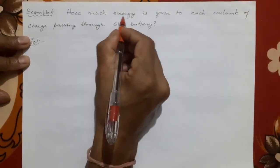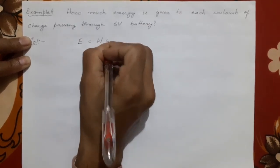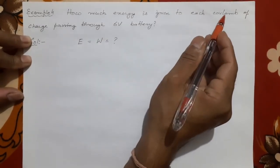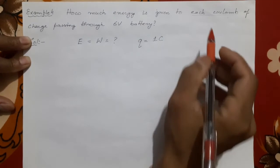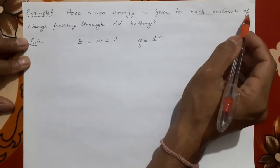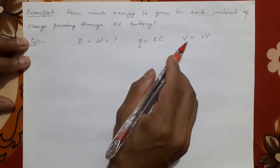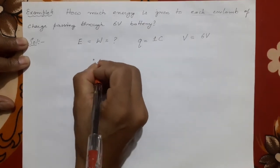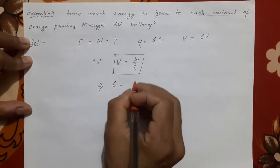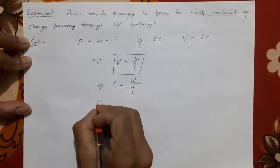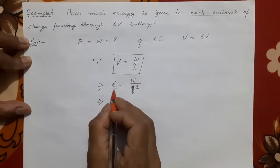Question 4 asks: how much energy is given to each coulomb of charge passing through a six volt battery? Energy is the same as work done, so you have to find W. 'Each coulomb' means the charge Q = 1 C. The battery voltage V = 6 volt. Using the formula V = W / Q, substituting: 6 = W / 1, so cross-multiplying gives W = 6 × 1.